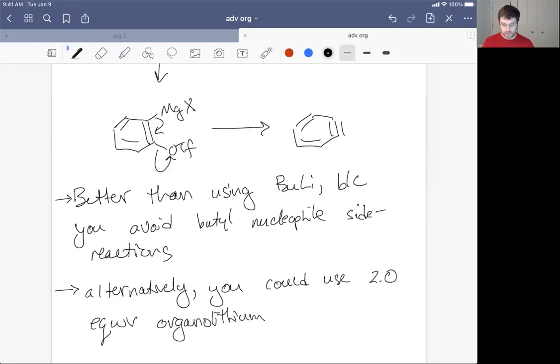So by two equivalents, that means sort of double the stoichiometric load. So if you were doing a metal halogen exchange and you had some sort of halo alkane, you had one millimole of it in your reaction, two equivalents would say you're adding two millimoles to the reaction.